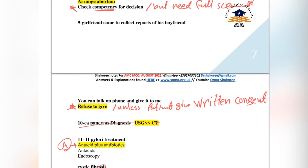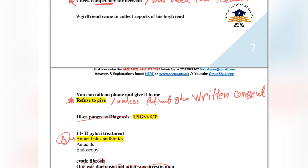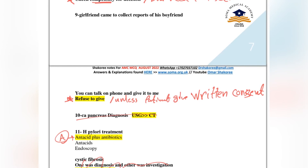You are not allowed to give the report to another person — only to the patient himself. If you want to give reports to another family member or another person, you have to take the patient's written consent. It must be written consent.